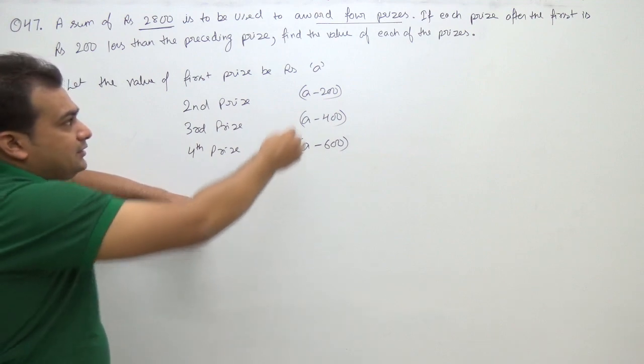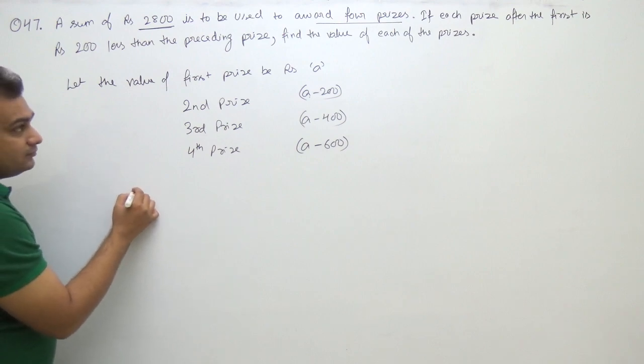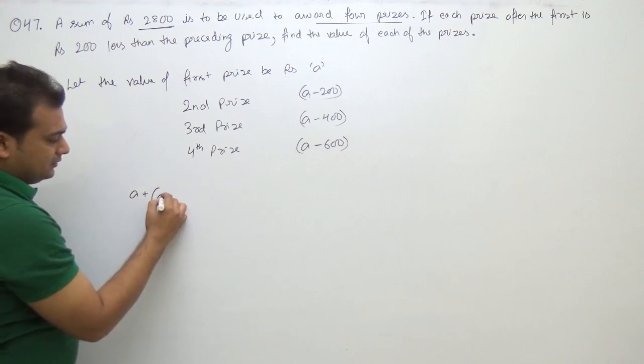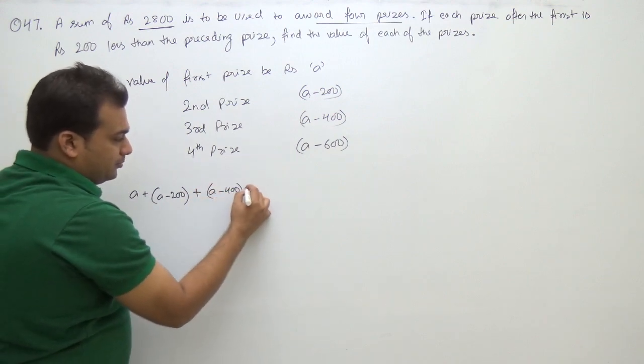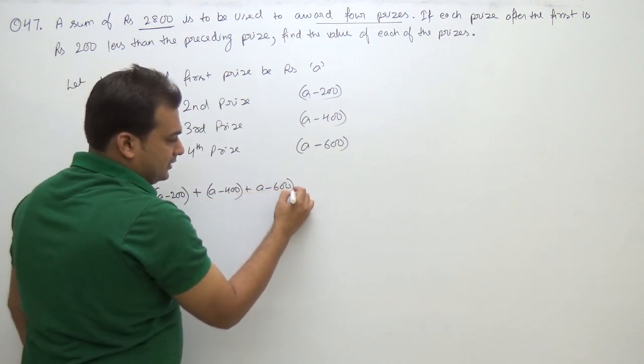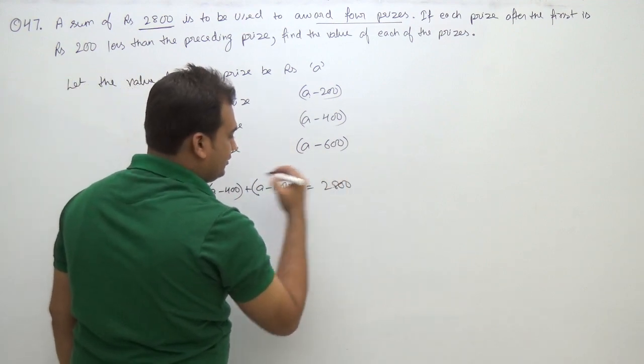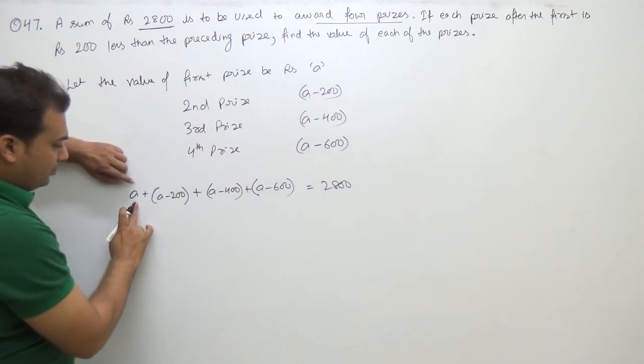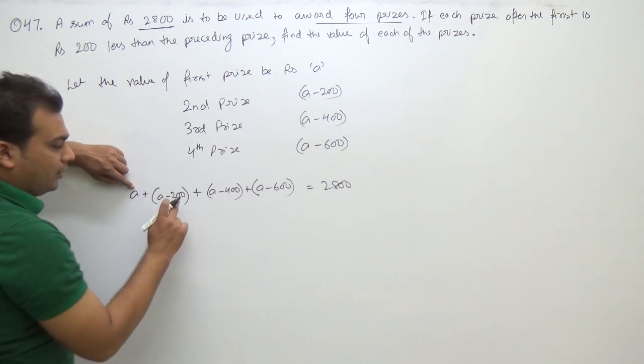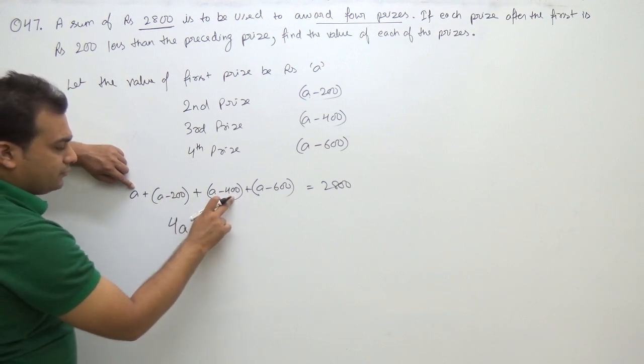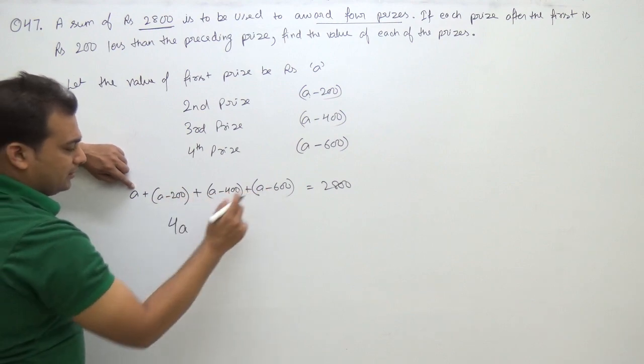So the sum is A plus A minus 200 plus A minus 400 plus A minus 600, which equals 2800. Combining like terms, we get 4A minus 200 minus 400 minus 600, which is 4A minus 1200 equals 2800.